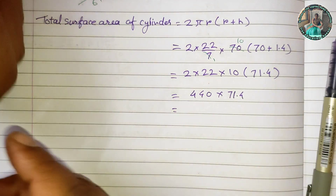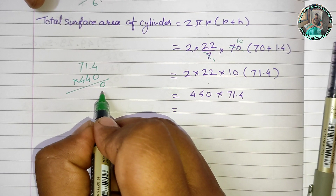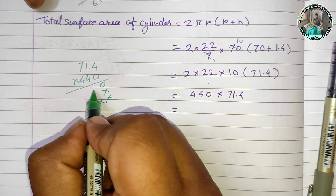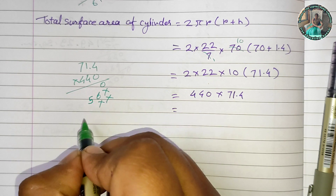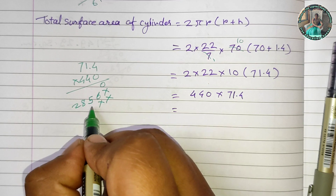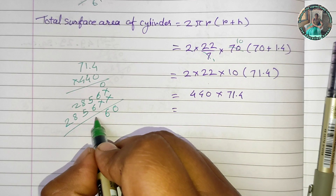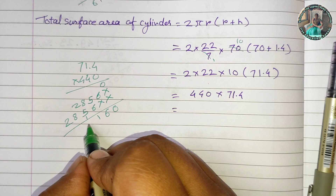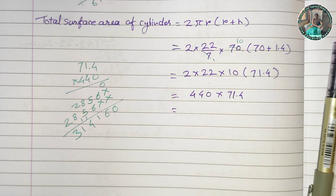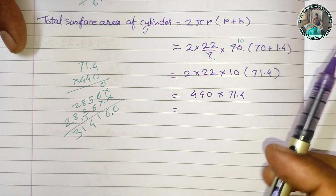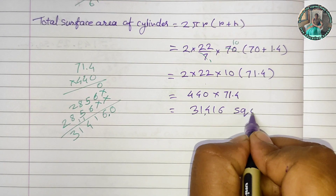We solve 71.4 × 440. Working through the multiplication: 440 × 71.4 = 31,416 square centimeters. So the total surface area of the cylinder is 31,416 sq cm.